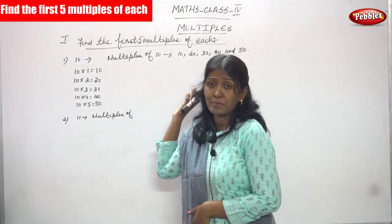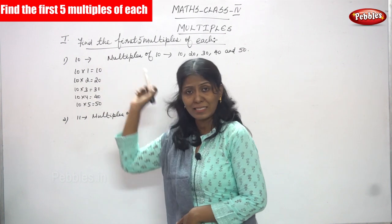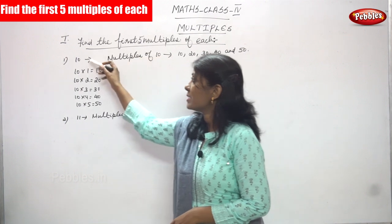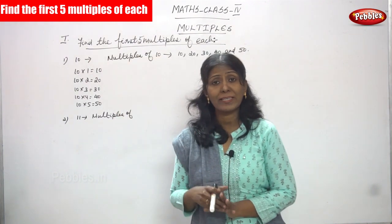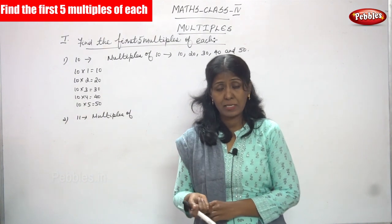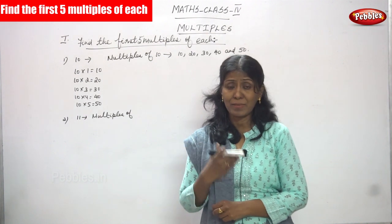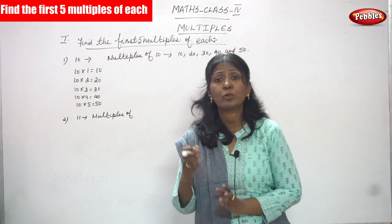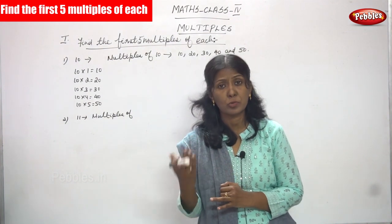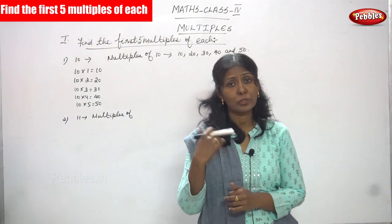So we have to write the multiplication table. 10 is the number, and we have to find the first 5 multiples of 10. So you are going to use the multiplication table — you must write the multiplication table of 10, but only for the first 5 multiples. That is: 10 into 1 is equal to 10, 10 into 2 is equal to 20, 10 into 3 is equal to 30, 10 into 4 is equal to 40, 10 into 5 is equal to 50.